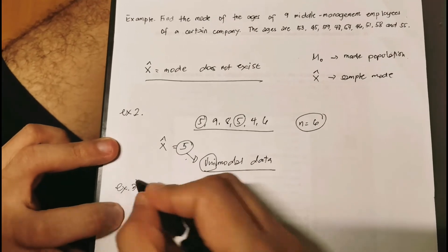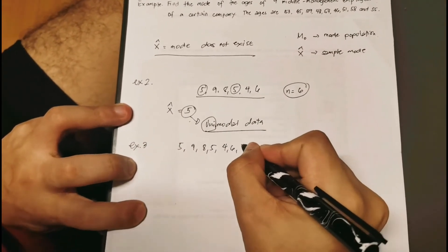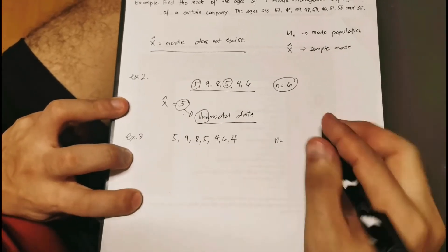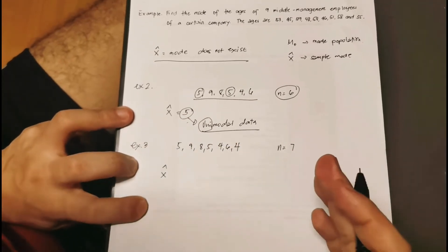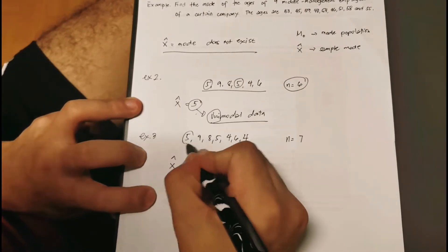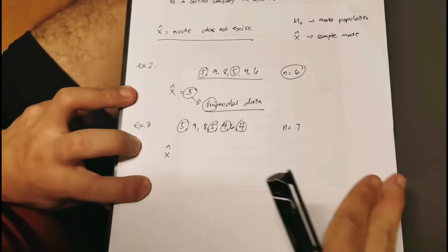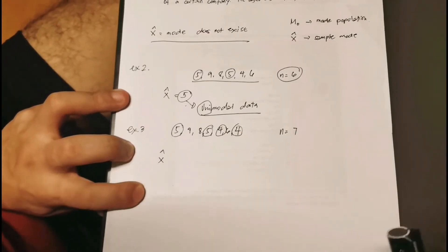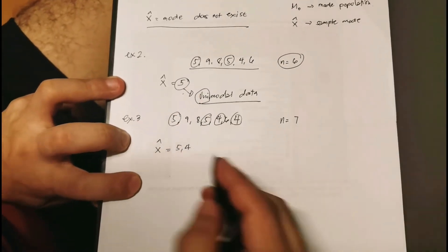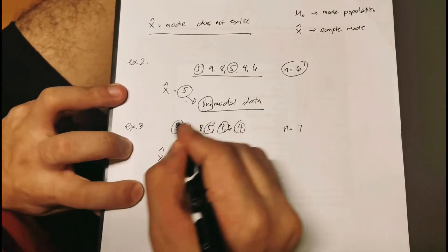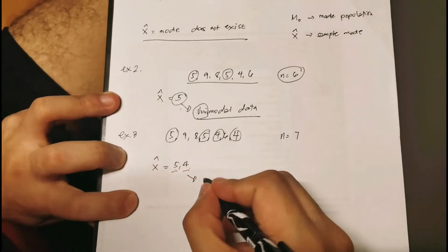For Example 3, we have: 5, 9, 8, 5, 4, 6, and 4 — so n equals 7. What is the mode here? Both 5 and 4 are repeated twice, meaning they have the same frequency. So our mode for this example is 5 and 4. Since we have two most-reoccurring values, we call this a bimodal data set — from the word 'bi,' meaning two.